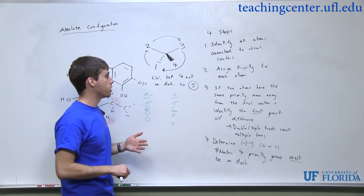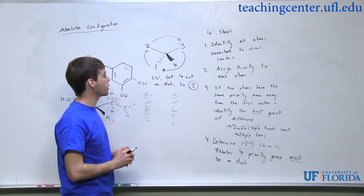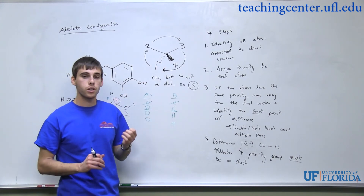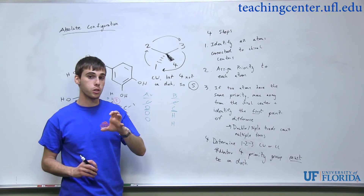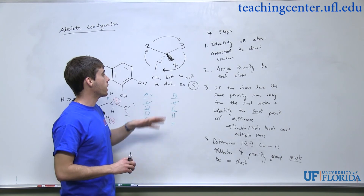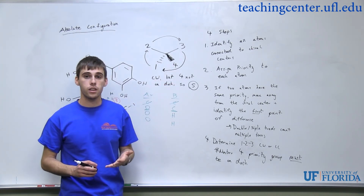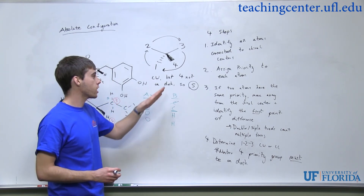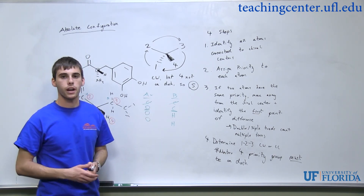This takes a little practice to get used to. Just make sure you think through it carefully and you can definitely do it. Another way — if you're having trouble wrapping your head around it — you can always rotate the molecule by switching any two groups twice, and you'll see that it indeed comes out to be S once the four is moved to be on the dash. This takes practice but eventually you'll get really quick at it and it will become almost automatic.